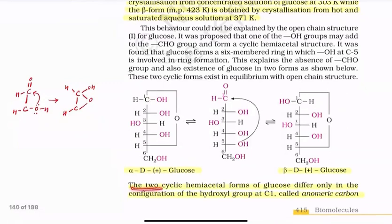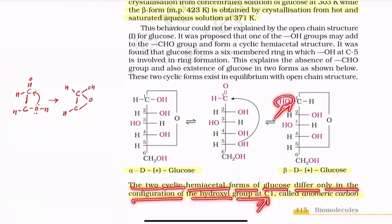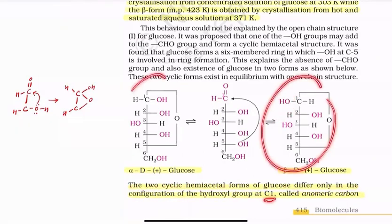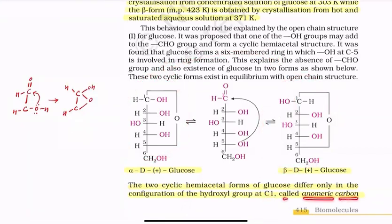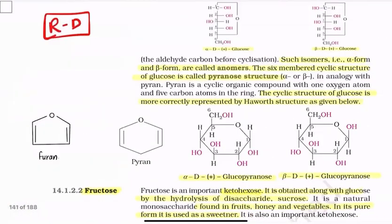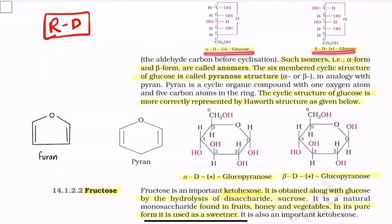The two cyclic hemiacetal forms of glucose differ only in the configuration of the hydroxy group at C1. This new optically active carbon created during cyclization at C1 is called the anomeric carbon. Alpha-D-glucose and beta-D-glucose are called anomers with respect to each other.